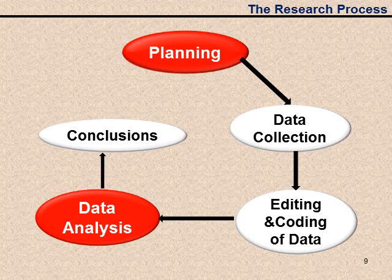Statistics is crucial in the research process. There are five steps involved in the research process: planning, data collection, editing and coding of data, data analysis, and conclusions. The planning phase is crucial to your success. If you do not clearly plan what you need, you won't end up with the right information — your information might not be valid. So you need to have very clear objectives in mind when you do your planning.